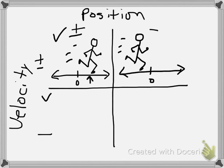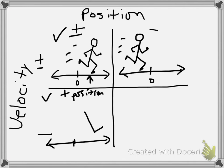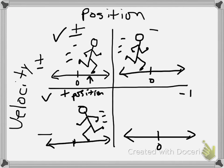Coming down here, this would be a place where you have positive position but negative velocity. Positive position puts him on the right side of zero — same as the first quadrant guy. But if it's a negative velocity, then he's got to be traveling in the opposite direction, so now he is traveling to the left. I'm going to leave the last quadrant — negative position with negative velocity — up to you to figure out.